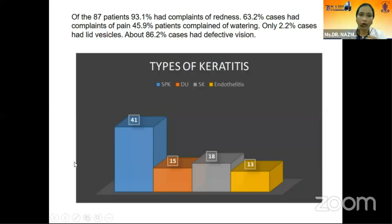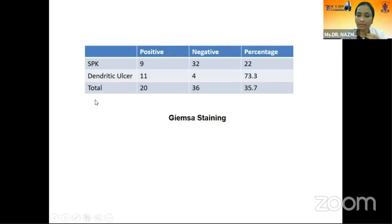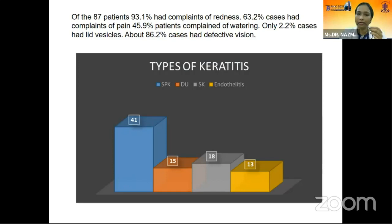Of the 87 patients, 93.1 percent presented with watering of the eye. 49.9 percent complained of watering only. 2.2 percent cases had lid vesicles. About 86.2 percent cases had defective vision. In terms of type of keratitis, 41 cases were found with superficial punctate keratitis (SPK).